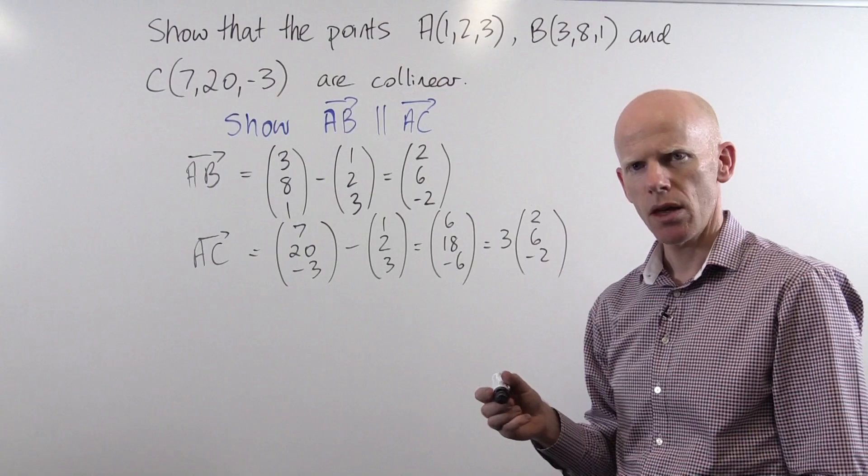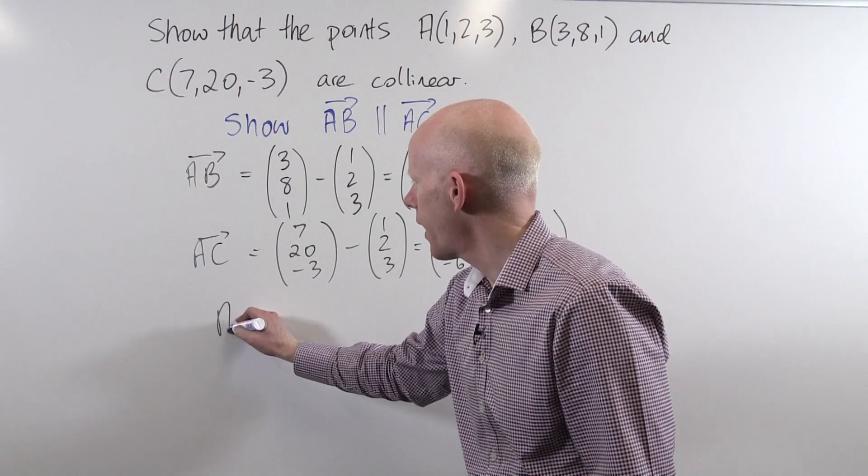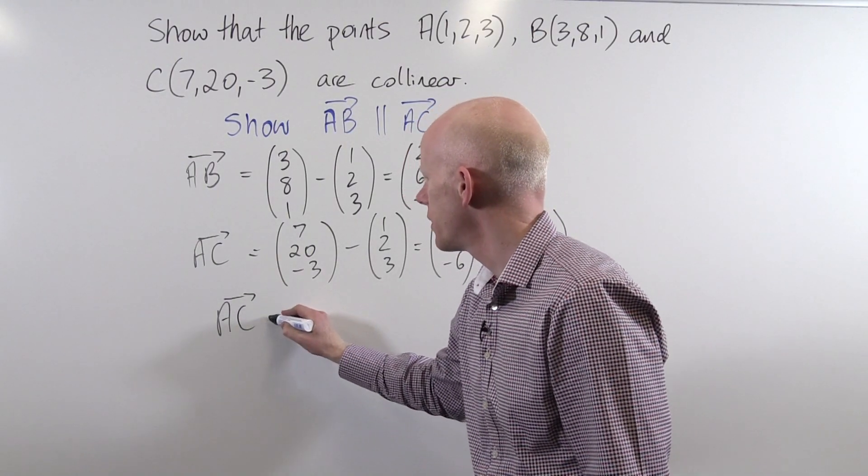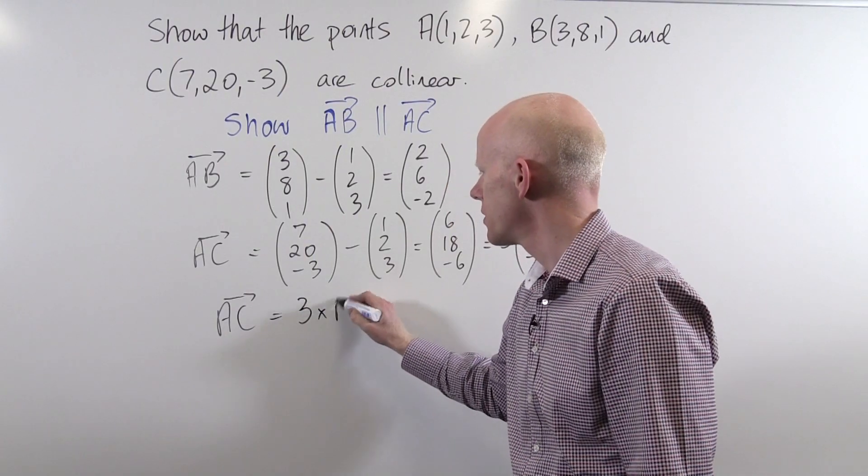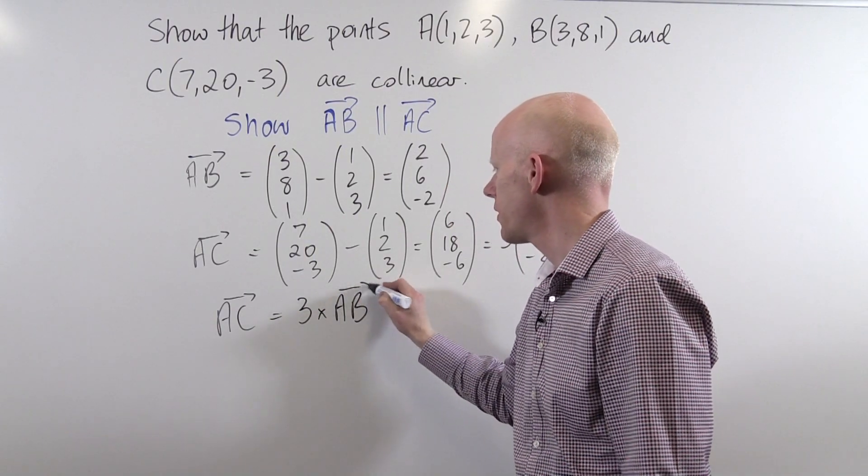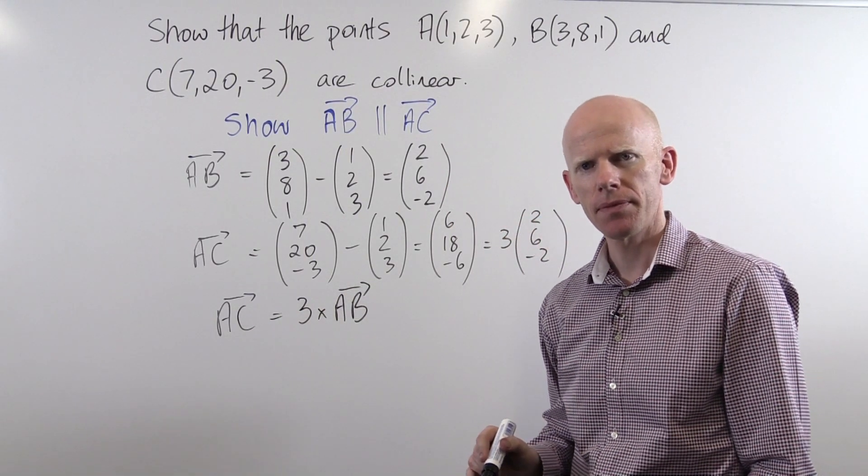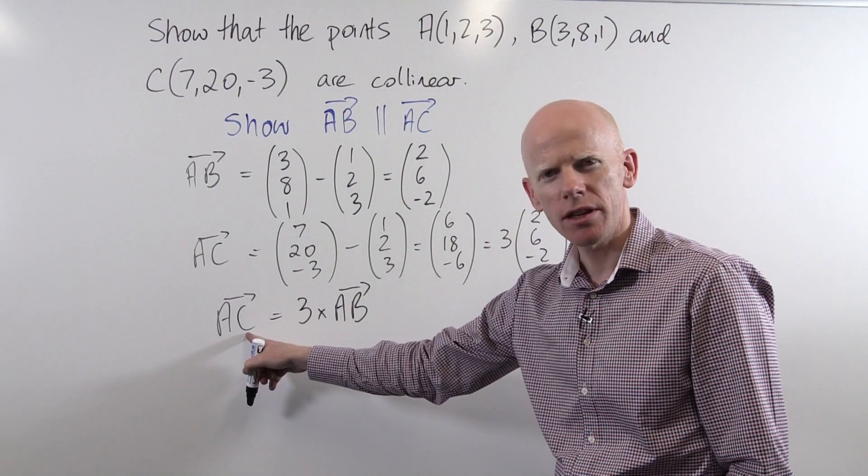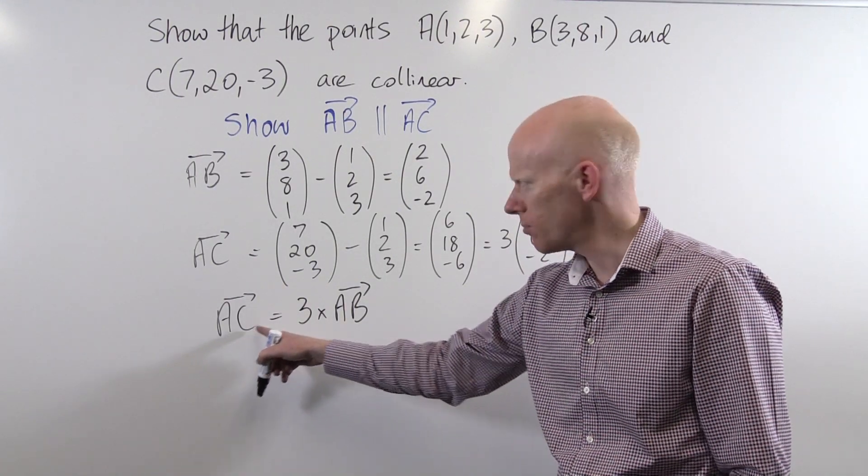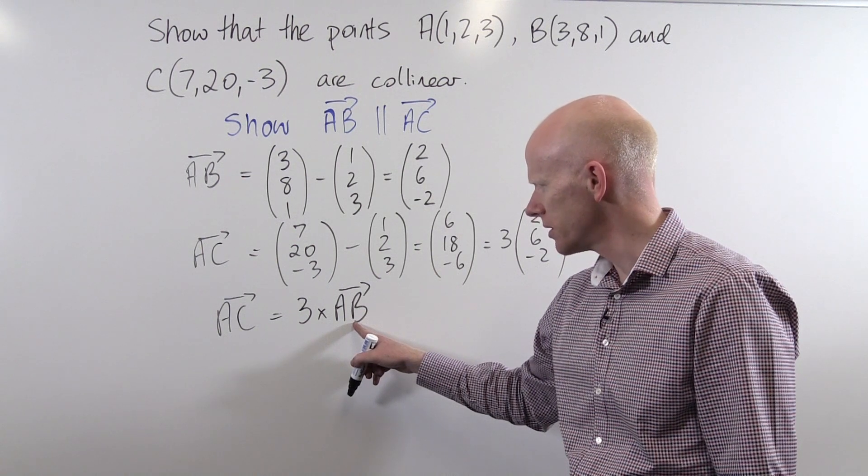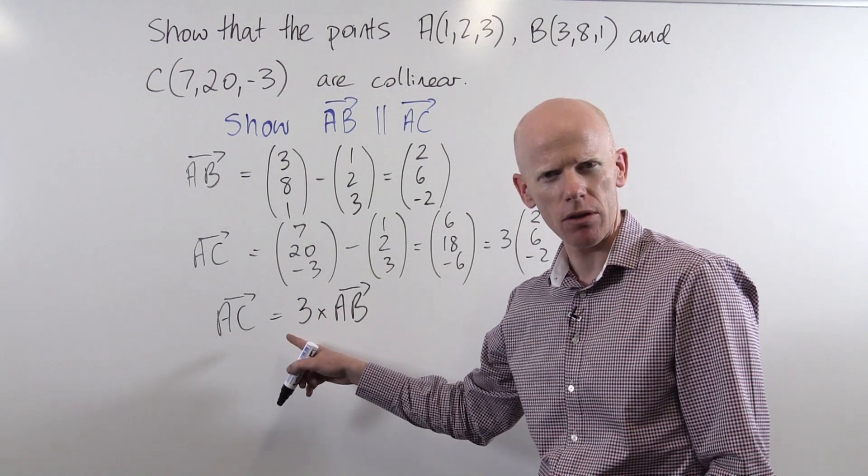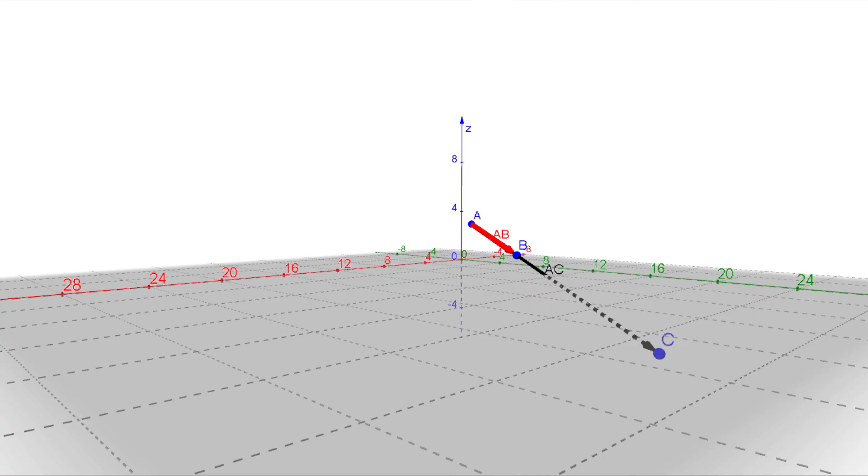So what do we know? We know that AC is 3 times the vector AB. This geometric vector has the same starting point as this geometric vector but is 3 times as long. Because they share a starting point, therefore the points A, B and C must be collinear.